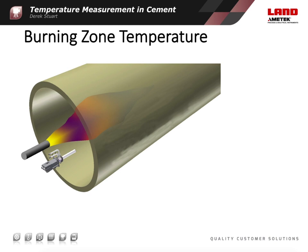Here we can see an Ametek Land pyrometer installed adjacent to the burner. This is a very aggressive location, with lots of vibration and high ambient temperatures, so it's important that the pyrometer and its mounting are designed for the application. The main disadvantage of the ratio thermometer is that it gives only a single measurement value from a small part of the kiln, and its readings can be deceptive if the target area is not optimised.